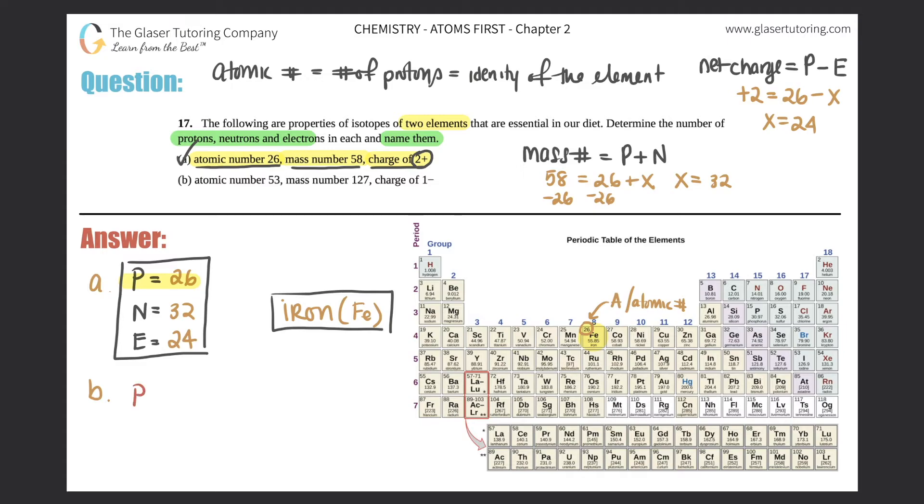So I'm going to say protons, neutrons, electrons, and let's start. They tell us that I have an atomic number of 53, and the atomic number is the number of protons, and that's the identity of the element. So here, I know that I have 53 protons, and now I just look on the periodic table to find out who has an atomic number of 53.